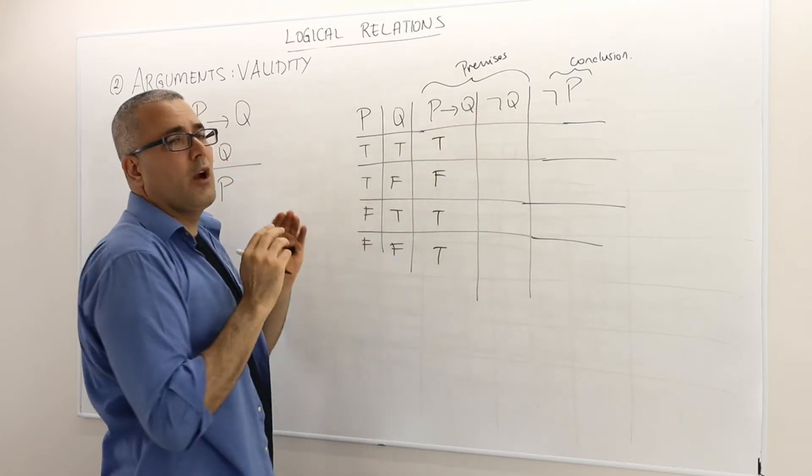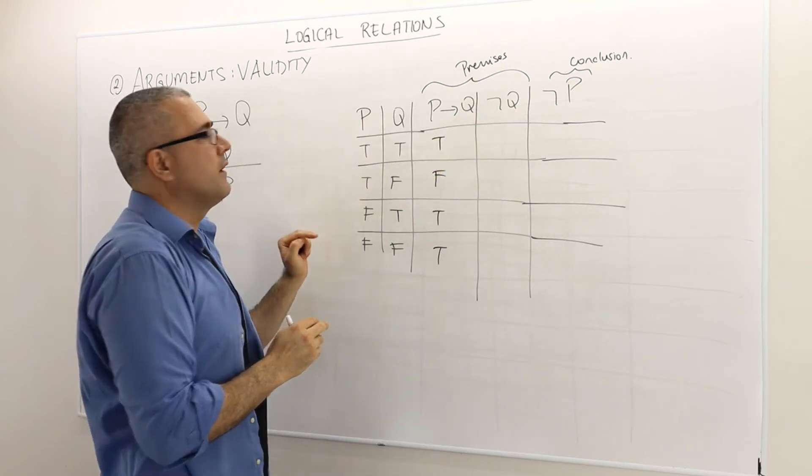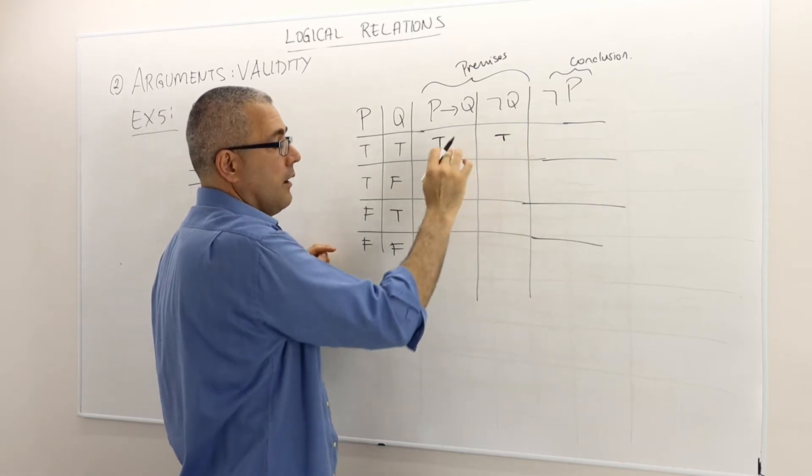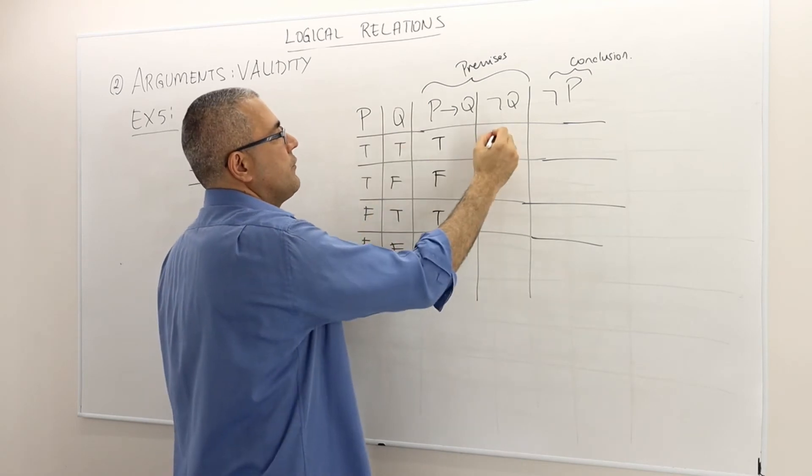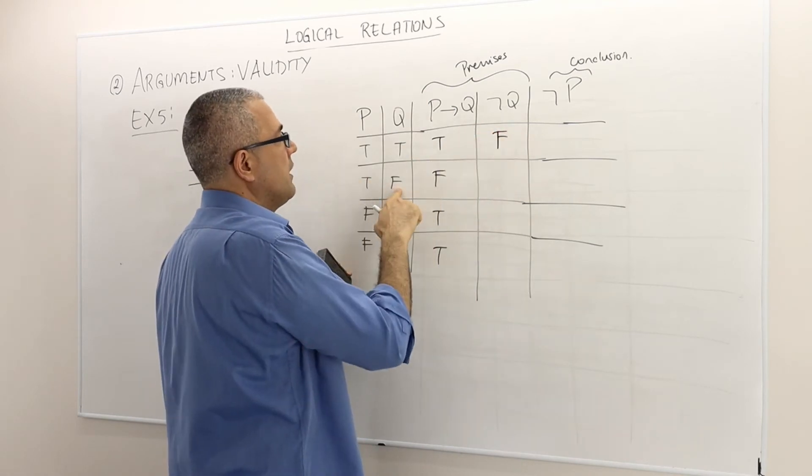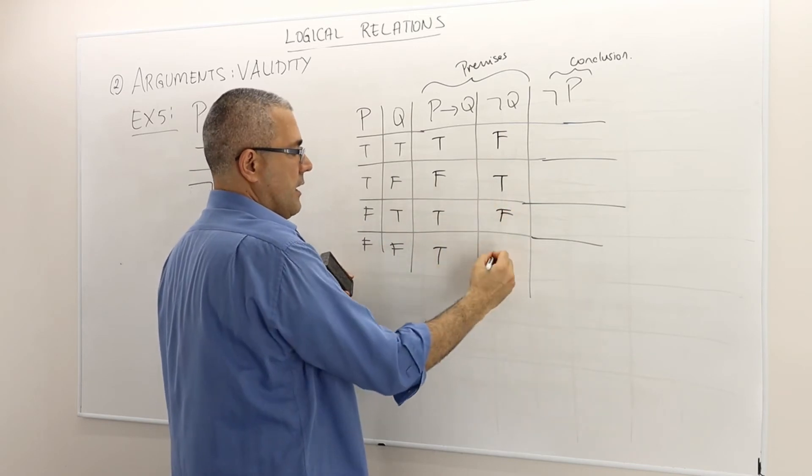Not Q, the premise, not Q is true whenever the atomic sentence Q is false. I'm sorry, it's not Q, the negation. So, if this is true, not Q must be false. If this is false, not Q must be true, false, and then true.